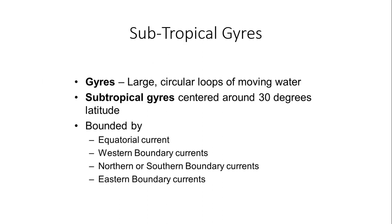Let's talk about these subtropical gyres — these large circular loops of moving water. Subtropical gyres are centered around 30 degrees latitude in both the northern and southern hemisphere. They are bounded on the south by the equatorial current, to the western ocean basins by western boundary currents, and to the north by northern or southern boundary currents, as well as eastern boundary currents. I will show you a map to demonstrate how this works.